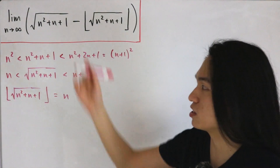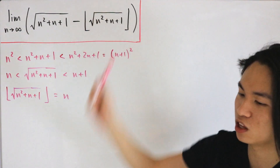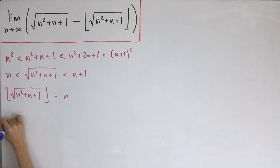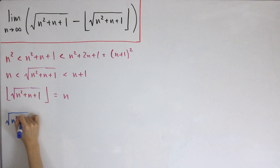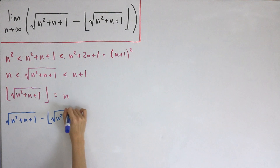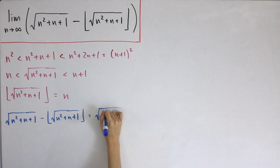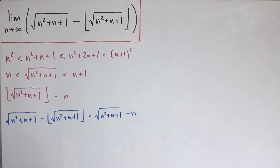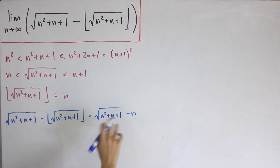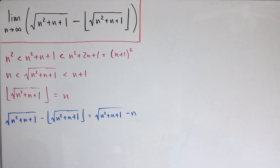Utilizing this creative inequality approach, we can substitute back into our given limit. Before taking the limit, let's fix things up algebraically. The square root of n squared plus n plus 1 minus the floor of the square root of n squared plus n plus 1 is simply the square root of n squared plus n plus 1, minus n. Now, wouldn't this just diverge toward infinity? Not if we use the conjugate method as learned in Calculus 1.